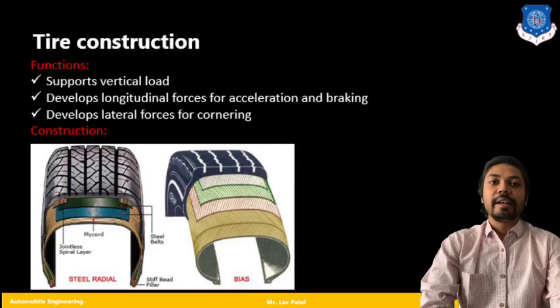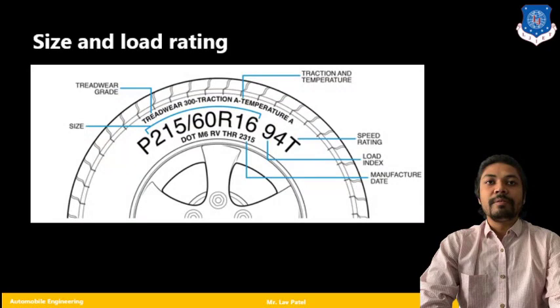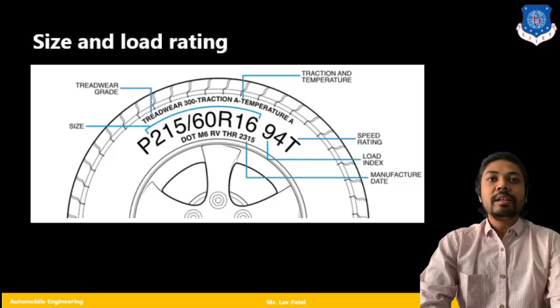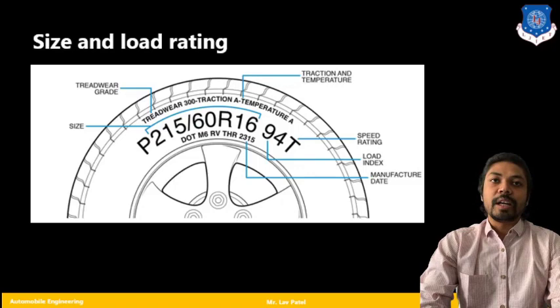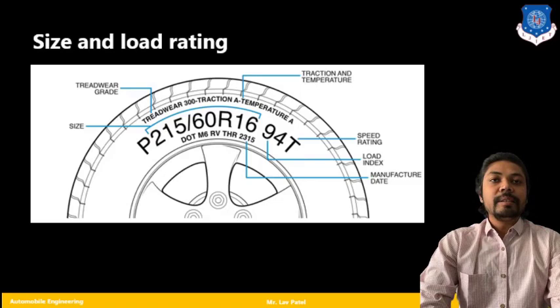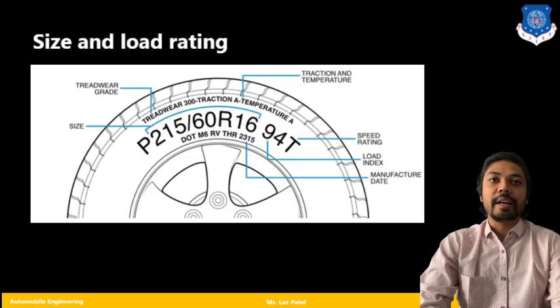Moving further, if we are talking about the size and load rating, here one typical diagram is there in which you will find all the specifications or data that we require to analyze or to purchase a new tire. Here one code, P215/60R16. We all know that 215 is the width of the tire, 60 is the aspect ratio, R is for radial tire, and 16 is the diameter in inches. That is 215/60R16, that is the overall size of the tire.